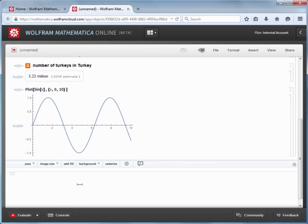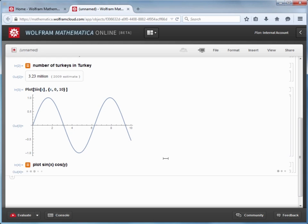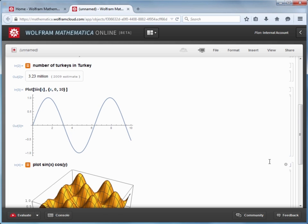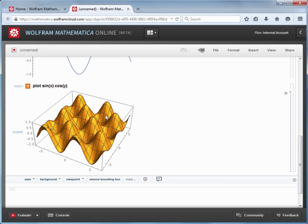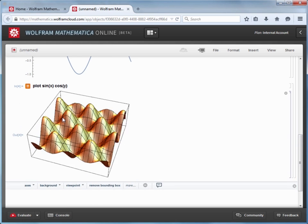Interactivity is supported in Mathematica online, so I can make a 3D plot. I'll go ahead and use freeform input to ask for a plot of sine X times cosine Y. And once I get that result, I can go ahead and click and then drag that plot to rotate it again just like you would in Mathematica desktop.